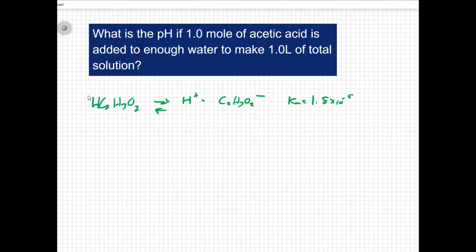So when we did these, we always did a nice chart looking at the initial change and equilibrium expressions. So for my acetic acid, I'm starting with one mole per one liter, so that's just a one molar solution. And initially, I don't have any hydrogen ion or any acetate ion.